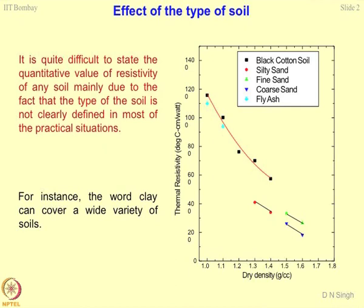Most of the time, natural soils available for construction or industrial applications will constitute mostly clays, and hence the resistivity will be very, very high. The biggest challenge is how to decrease the resistivity of the soil mass so that construction work related to air conditioning ducts, buried pipelines, cables, and so on can be done. This addresses the influence of material type and fraction size on resistivity with respect to dry density.